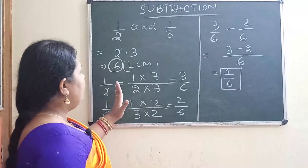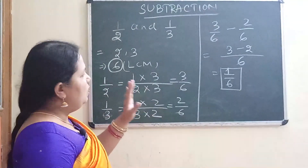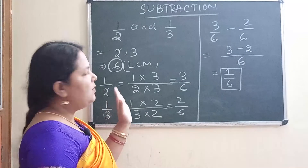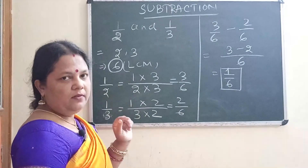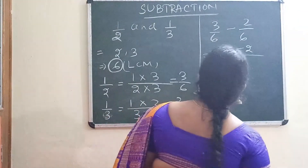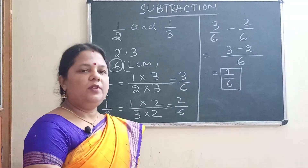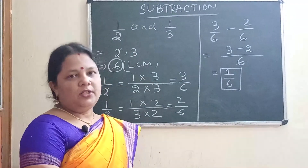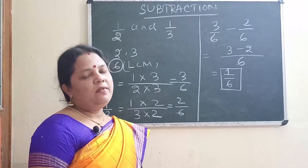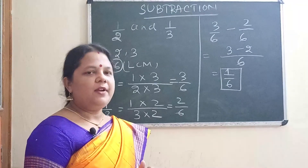So addition and subtraction processes are the same — for addition we find the sum, for subtraction we find the difference. Apply this method for addition and subtraction of like and unlike fractions. Next class we will proceed with multiplication of fractions.